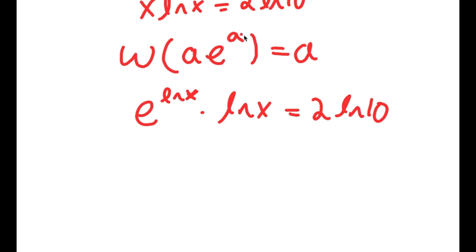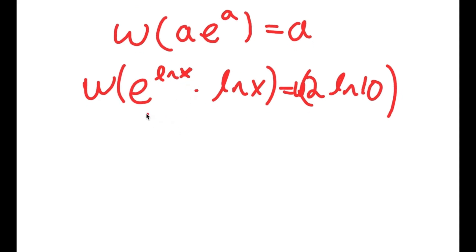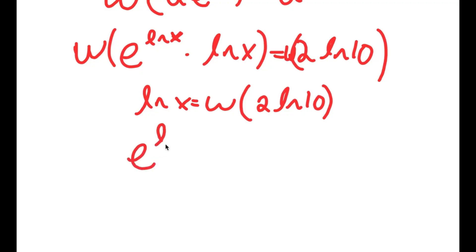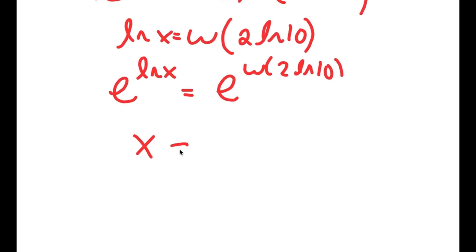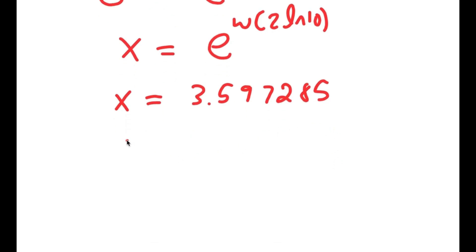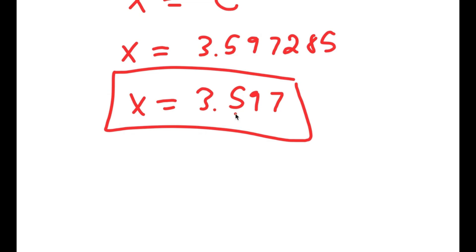Taking the Lambert W function on both sides gives ln x equals W of 2 times ln 10. Taking e to the power of both sides, e to the power of ln x equals x, so x equals e to the power of W of 2 ln 10. This equals approximately 3.597285, which rounds to 3.597.